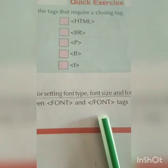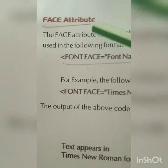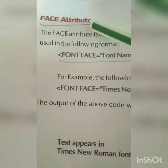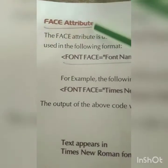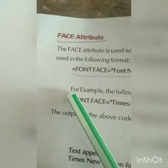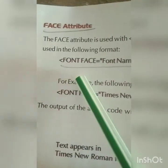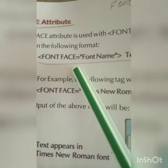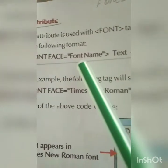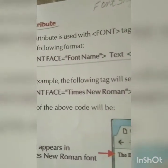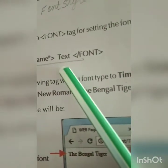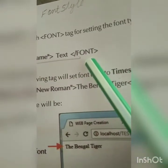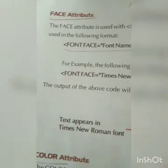On page 54, the first attribute is the face attribute. The face attribute means font style — whatever font style you want, you select. The syntax is: font face equals the font name in quotes, then your text, then close the font tag. You write the name of the font, and only that selected text will appear in that font.